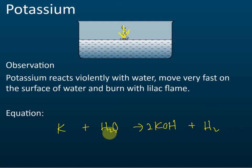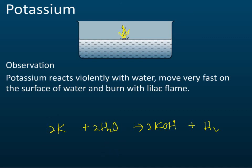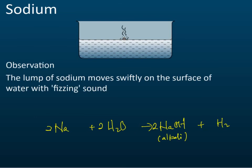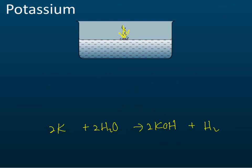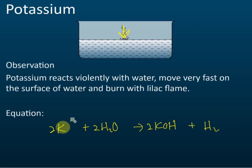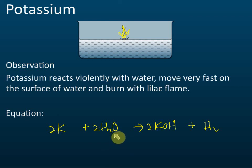The equation for potassium is also the same pattern: 2K + 2H₂O → 2KOH + H₂. To balance it, put a 2 in front of potassium, water, and potassium hydroxide — same as lithium and sodium. The coefficients are 2, 2, 2 for the metals and hydroxides, while hydrogen gas stays as H₂.